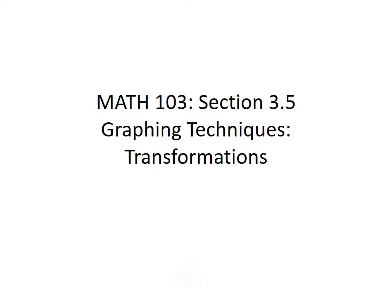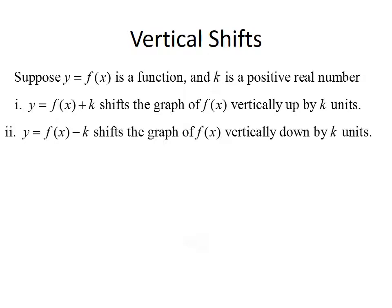In this lecture, we're going to talk about graphing techniques, specifically graphing using transformations. The first transformation we'll deal with is a vertical shift. Suppose y = f(x) is a function and k is a positive real number. Then, y = f(x) + k, where the constant k is added outside of your original function, will shift the graph of f(x) vertically up by k units. And y = f(x) - k will shift the graph vertically down by k units.